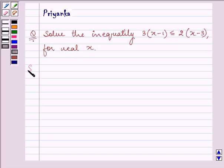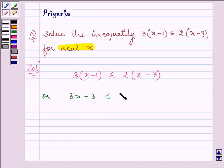Now, we need to solve for real x. So, let us rewrite the inequality given to us. On removing brackets, we have 3x - 3 ≤ 2x - 6.